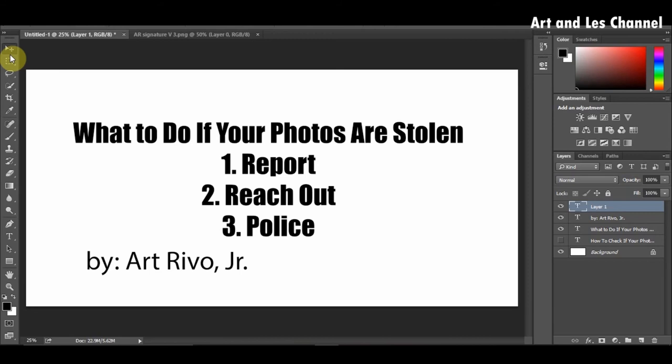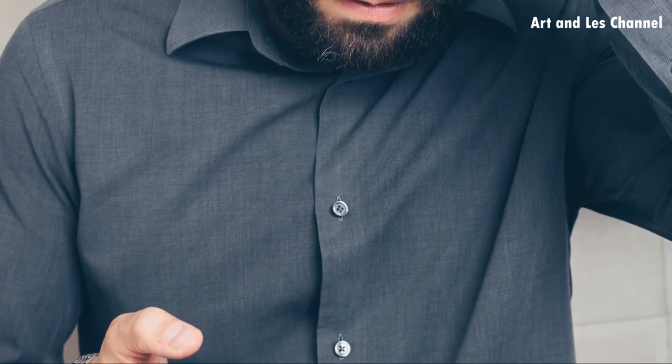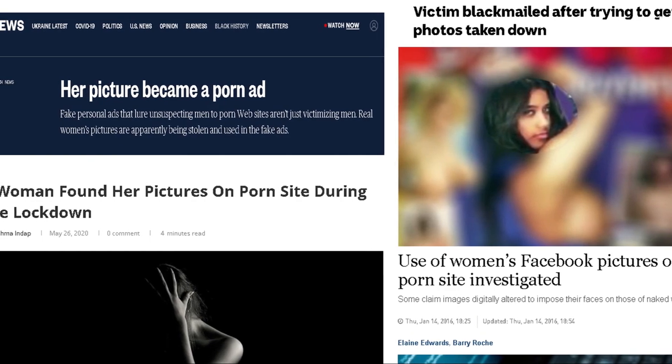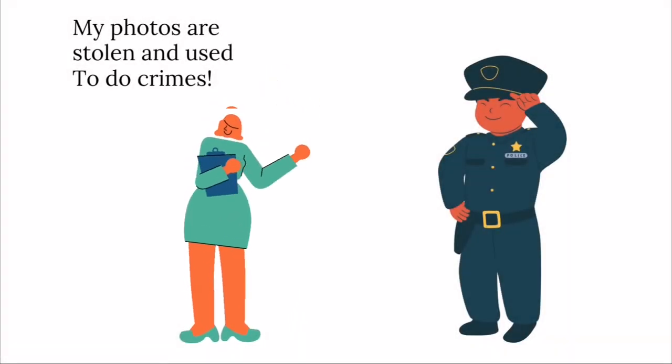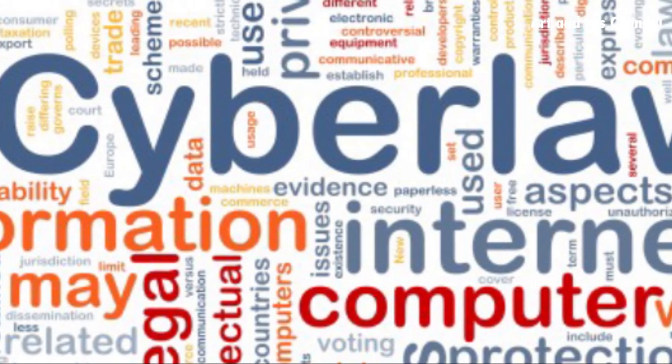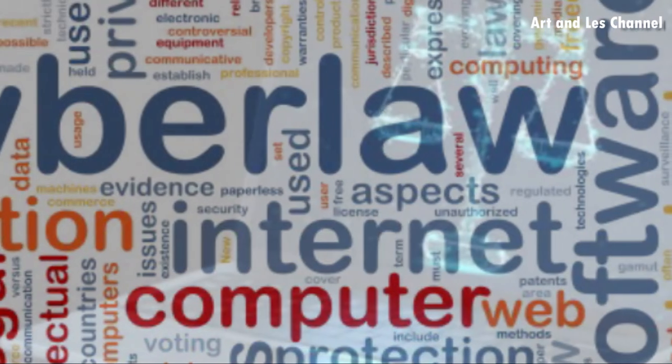Number three is your last resort, and I hope you don't need this one. If these people are online predators, they will use your photos for bad intentions — even to commit crimes. They will pretend to be you and operate scams and frauds, or post your photos on indecent websites to get money. You must act quickly and go straight to the police. Nowadays, there are more and more cyber laws being implemented to protect our safety and privacy. You should use reverse image search every now and then to discover if someone is using or abusing your photos.